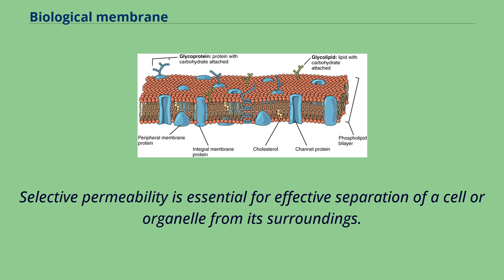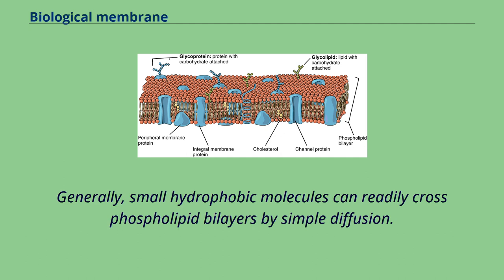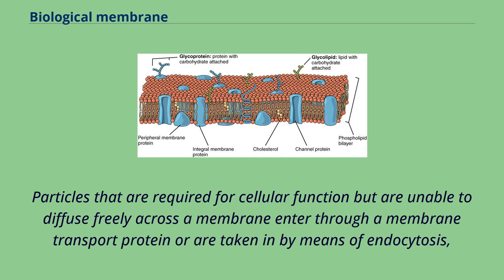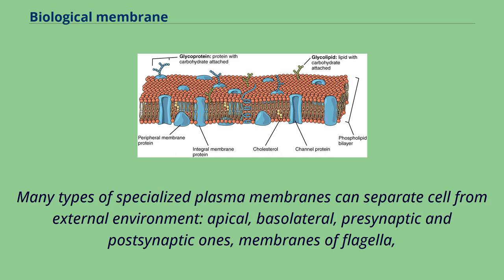Biological membranes also have certain mechanical or elastic properties that allow them to change shape and move as required. Generally, small hydrophobic molecules can readily cross phospholipid bilayers by simple diffusion. Particles required for cellular function but unable to diffuse freely across a membrane enter through a membrane transport protein, or are taken in by endocytosis, where the membrane allows a vacuole to join onto it and push its contents into the cell.